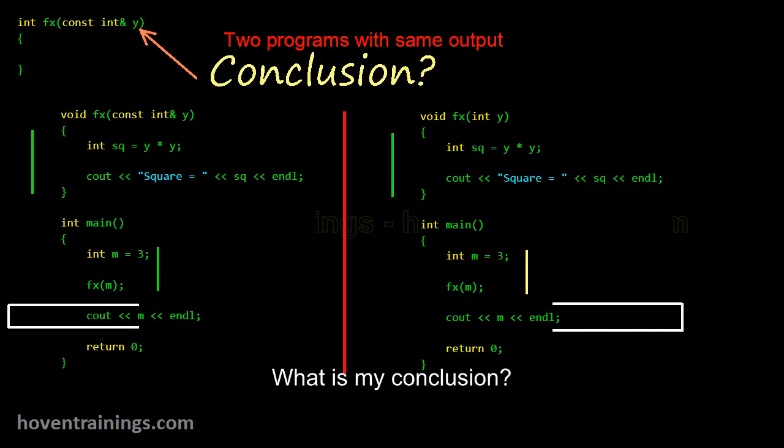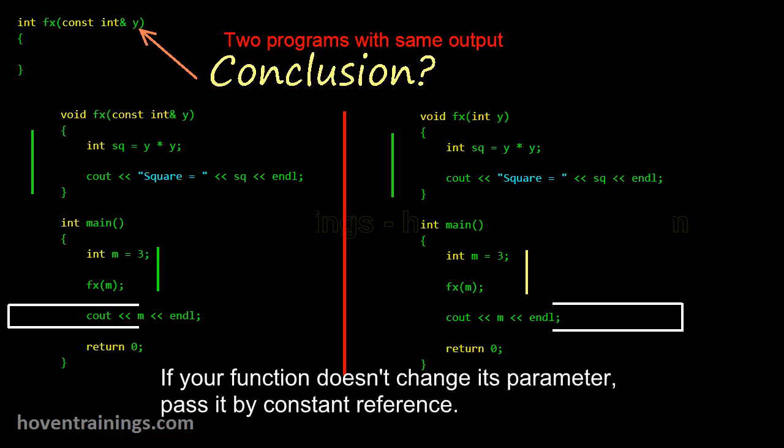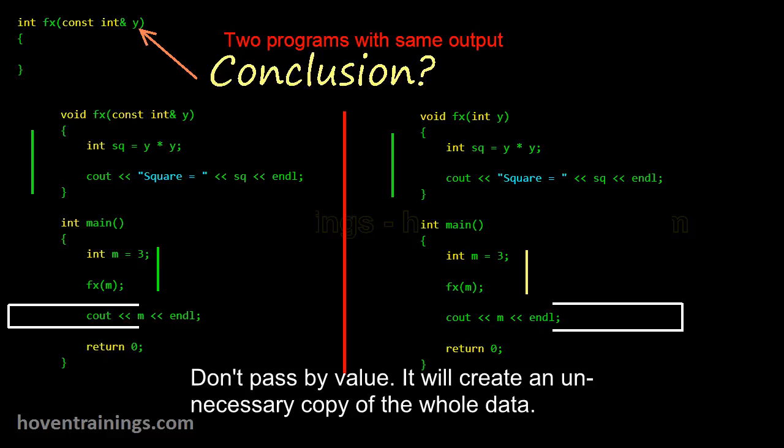What is my conclusion? If your function doesn't change its parameter, pass it by constant reference. Don't pass by value.